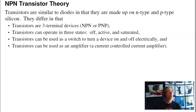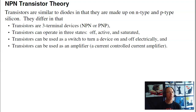We've been looking at diodes so far. Diodes are PN junctions. If you have a three-junction device — NPN or PNP — that's a transistor. Transistors are similar to diodes in that they're made up of N-type and P-type silicon. They differ in that you now have three terminals — NPN or PNP. They can operate in three states: off, active, and saturated. They can be used as a switch to turn a device on and off electronically — that's what we do in ECE 320 digital electronics. They can also be used as an amplifier — that's what we cover in ECE 321 analog electronics.